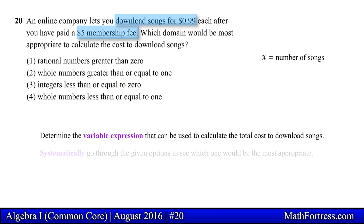So if we let x represent the number of songs, then the total cost for downloading x number of songs will be given by the following expression: 5 plus 0.99x. This expression represents the total cost for downloading x number of songs.